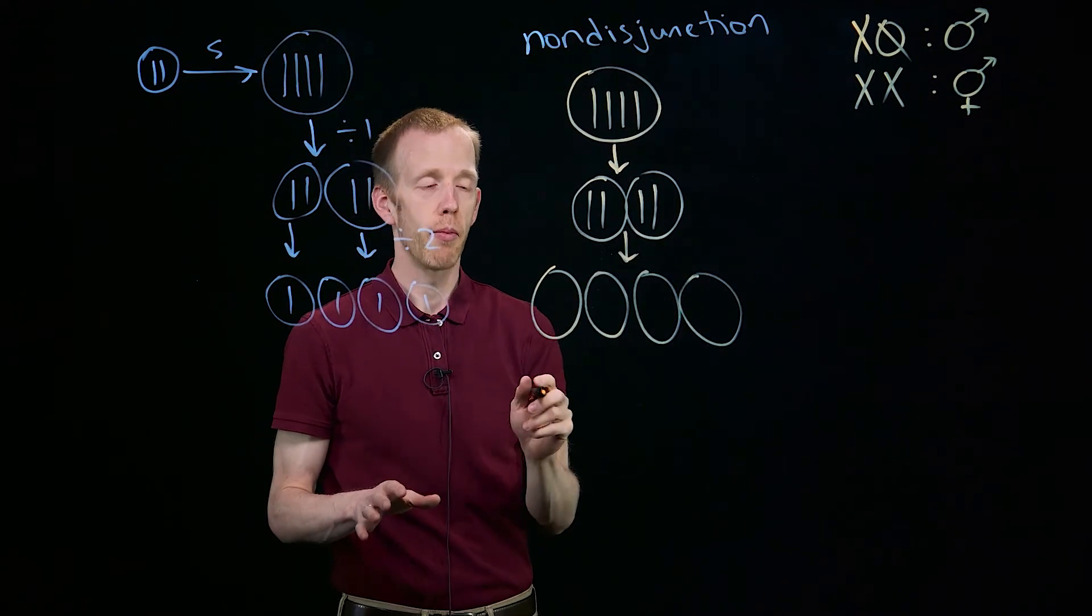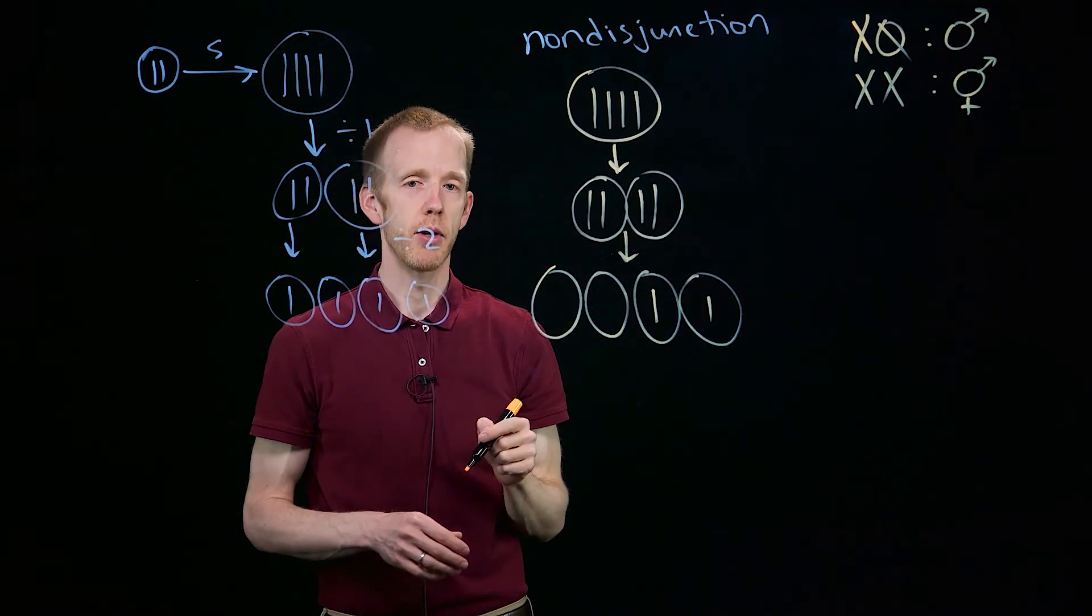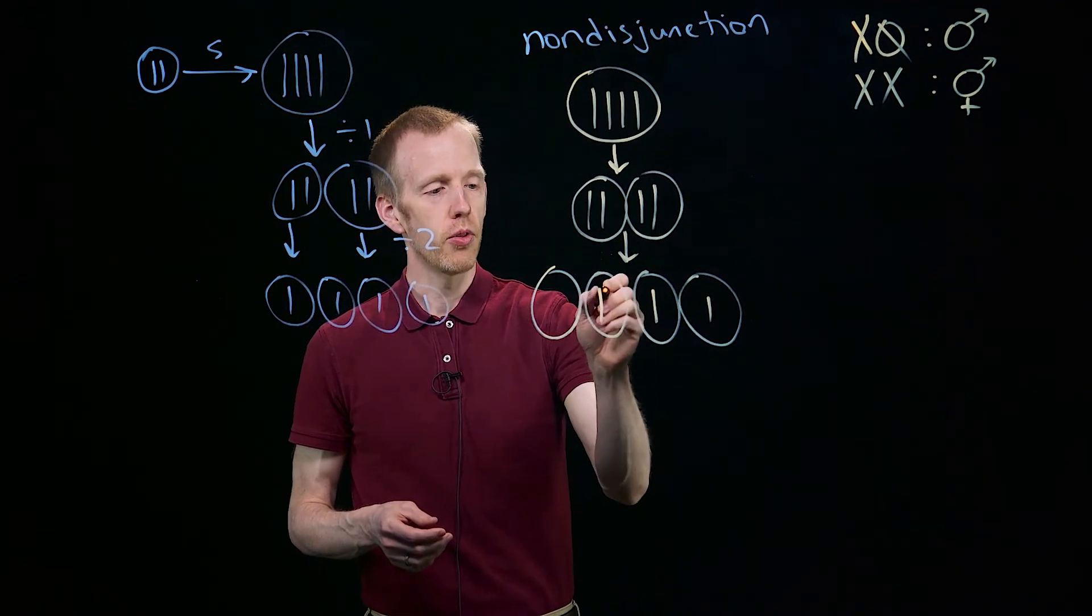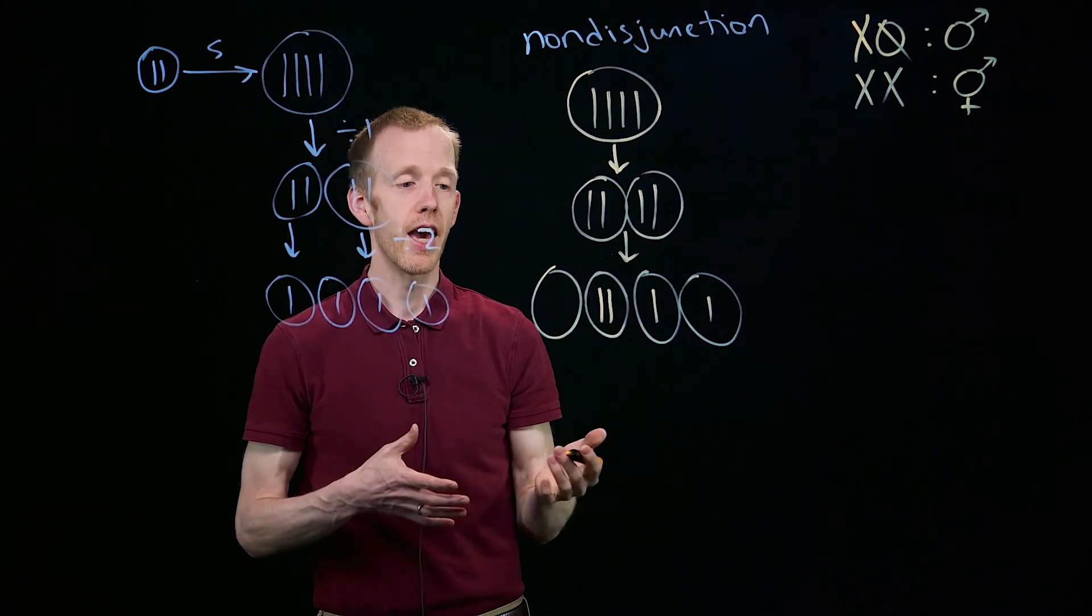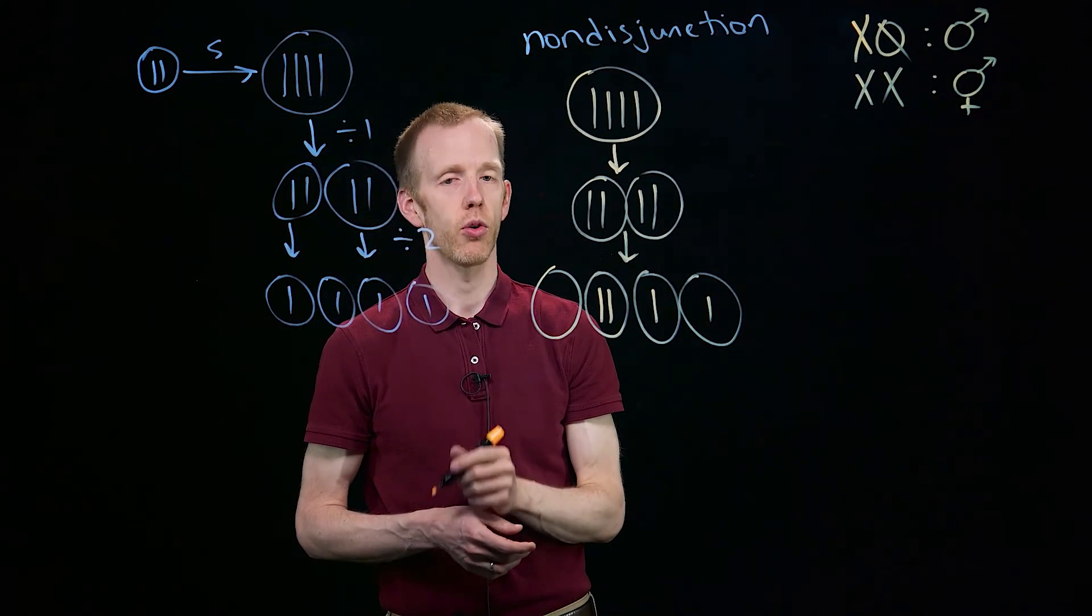So in this case, what might happen is this daughter cell segregates properly, but this gamete, pre-gamete, undergoes non-disjunction, where both of those sister chromatids segregate together into one gamete, producing one gamete that does not have a copy of this specific chromosome.